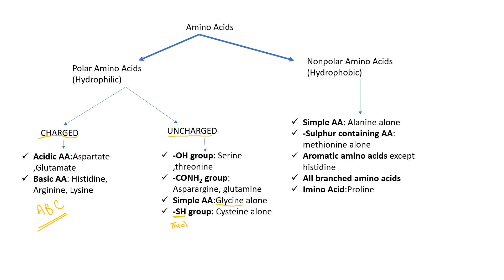Non-polar amino acids are alanine, methionine, all aromatic amino acids, branched chain amino acids, and imino acids. Histidine is an aromatic amino acid but it is also a basic amino acid and hence it is polar.